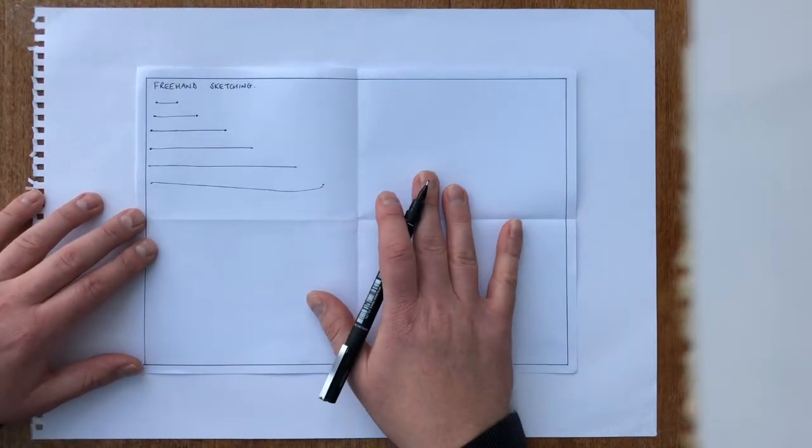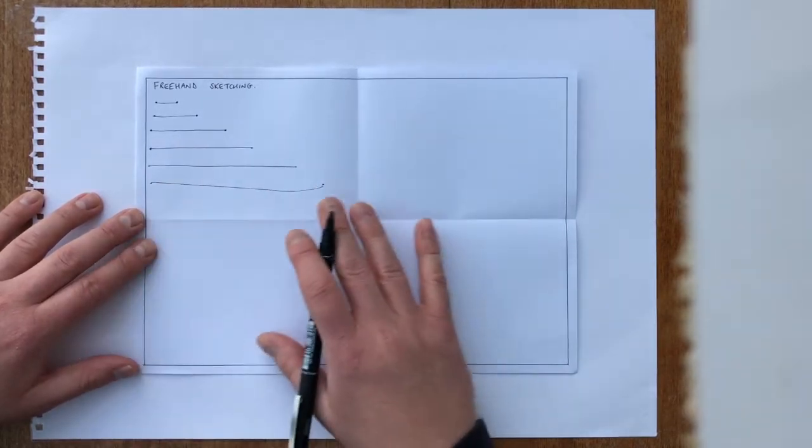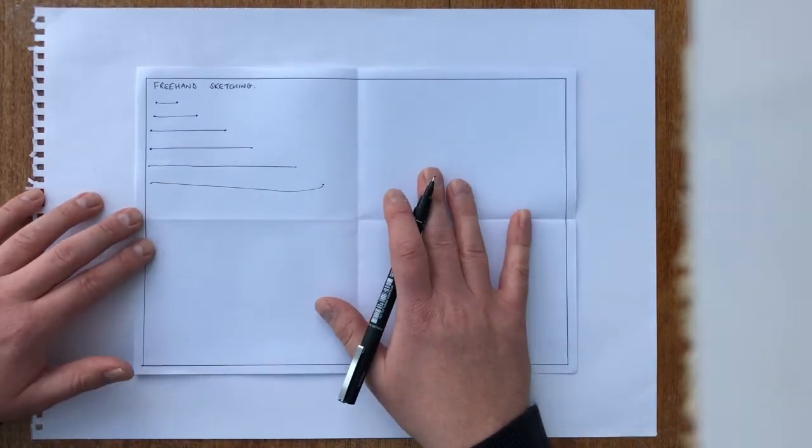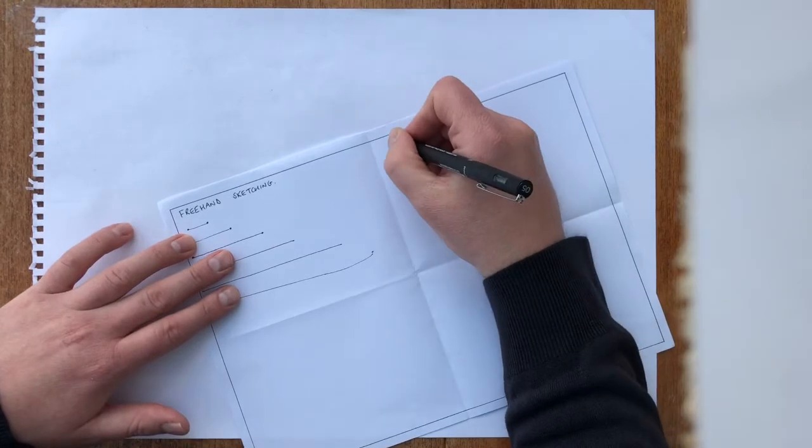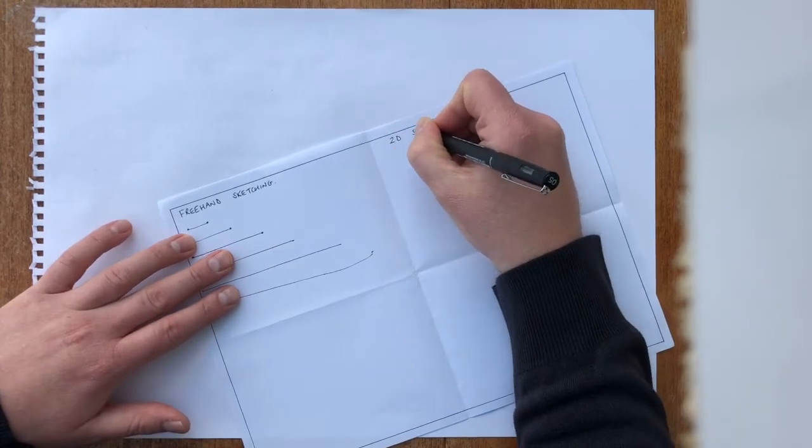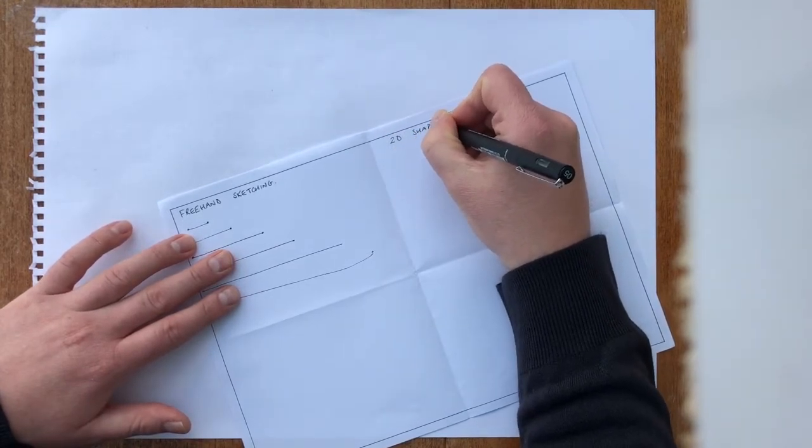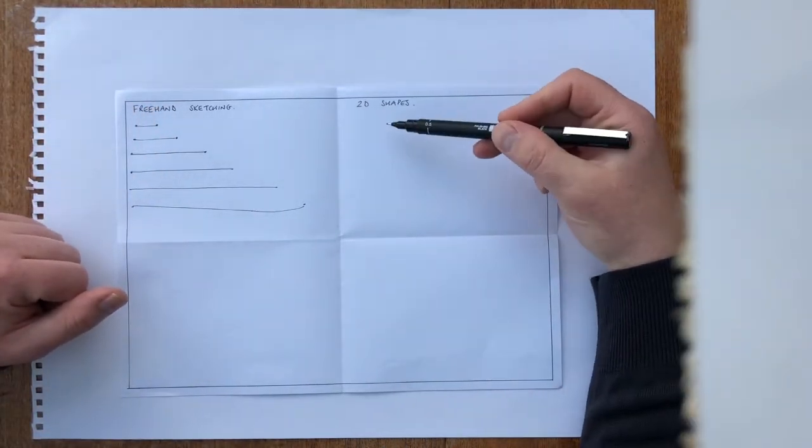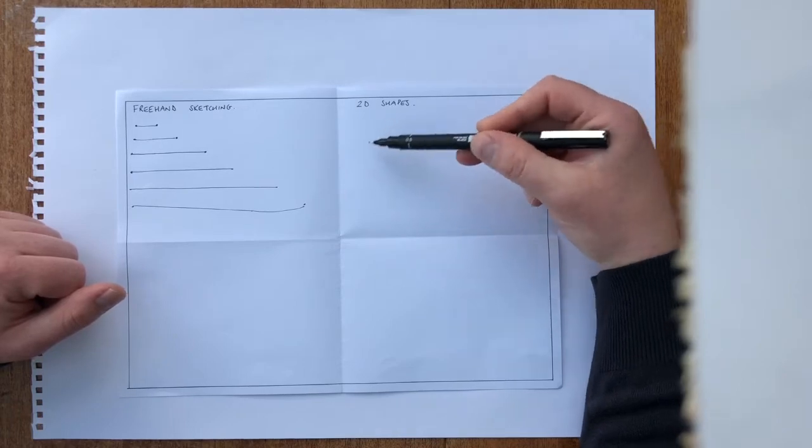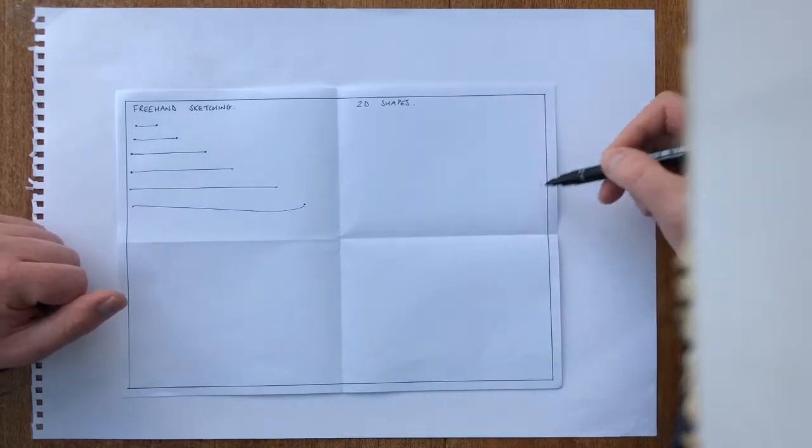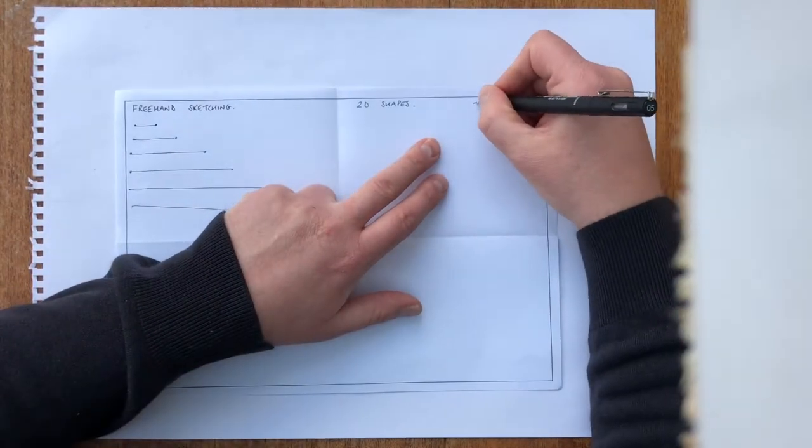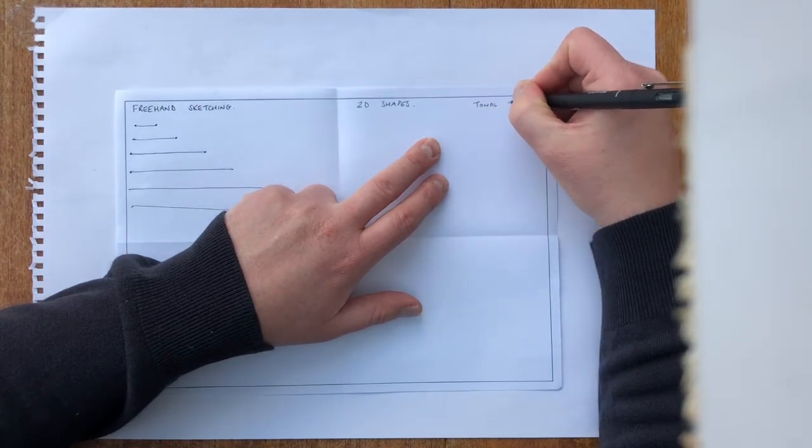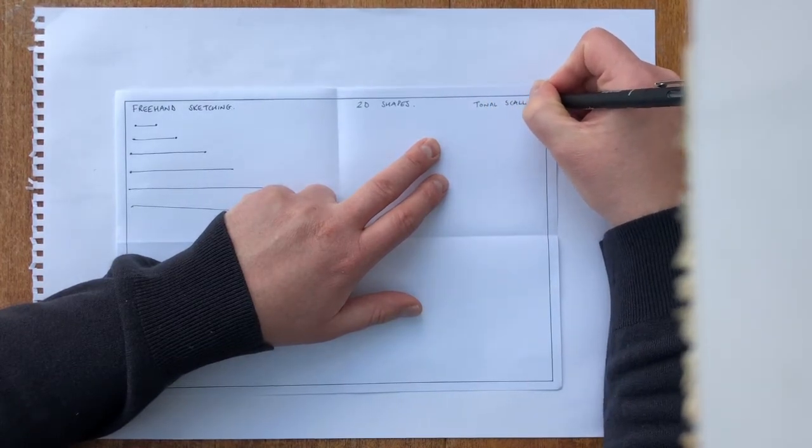The next skill we're going to look at is applying these skills in freehand sketching into drawing 2D shapes. For this technique, we're going to just focus on rectangles. We're going to draw three small rectangles in this space. In this space across here, we're going to do something called a tonal scale, and that's going to be for when we add on the colour.